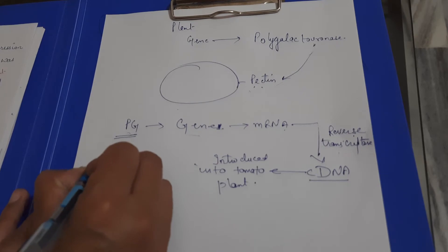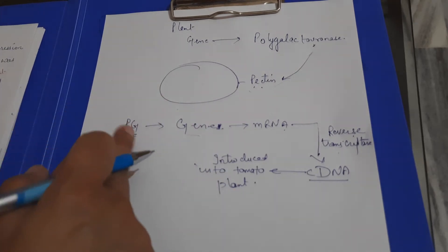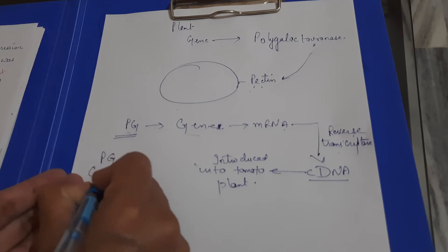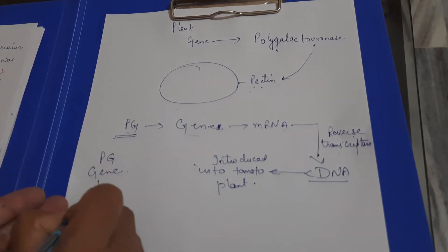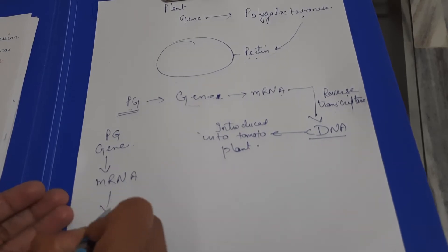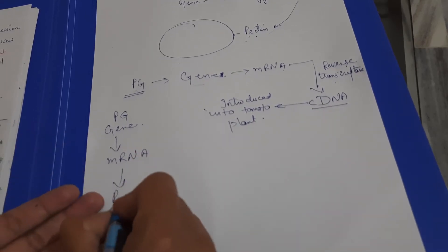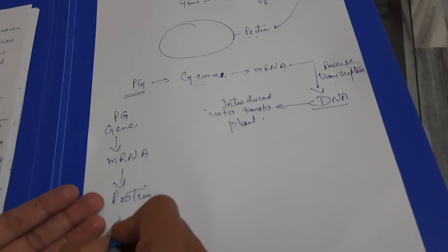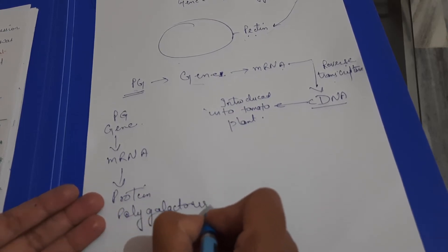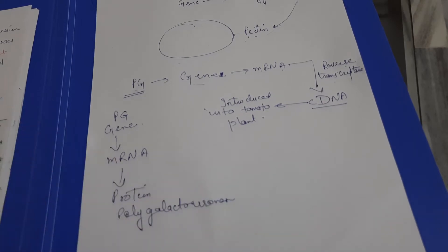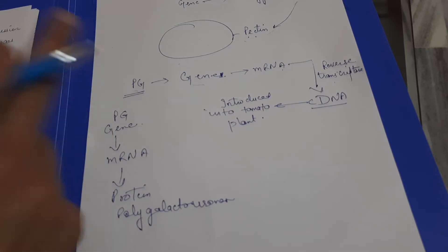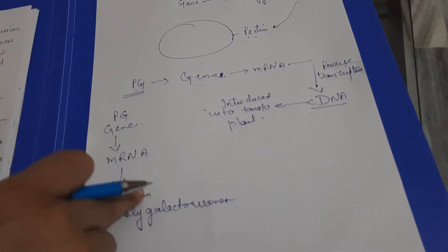Normally, in a plant, the polygalacturonase gene is expressed to produce mRNA, and from that mRNA the protein — the polygalacturonase enzyme — is formed. This enzyme is the product of normal gene expression in the tomato plant.